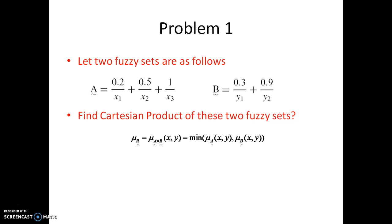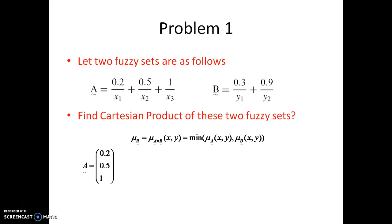We need to find the minimum value. But first, there are three values in A and only two values in B — so how do we find the minimum value? We need to arrange the fuzzy sets properly for getting the Cartesian product. A should be a column vector and B should be a row vector. That should be the procedure. A has values 0.2, 0.5, and 1 — it is a 3×1 matrix. B is a row matrix, a 1×2 matrix.